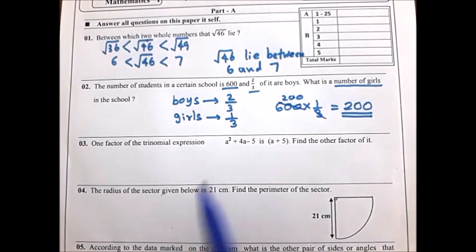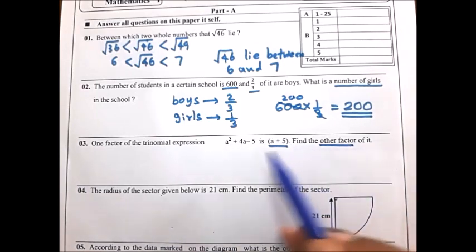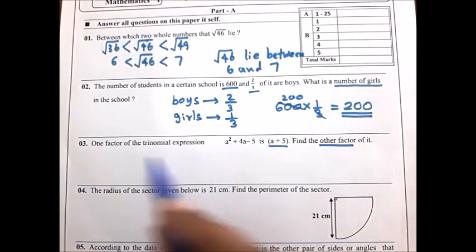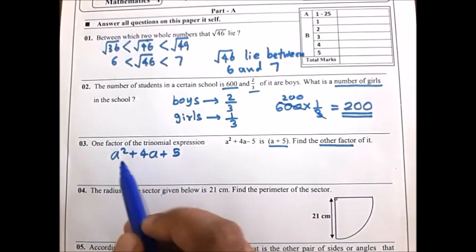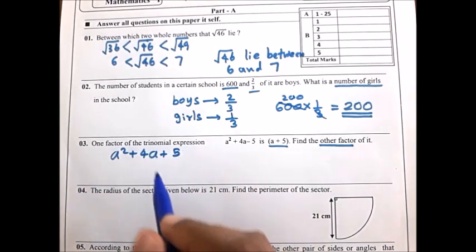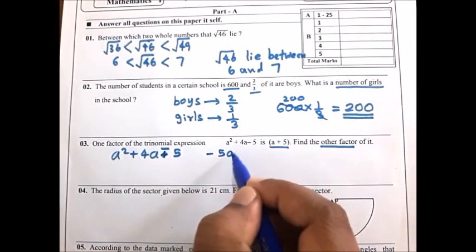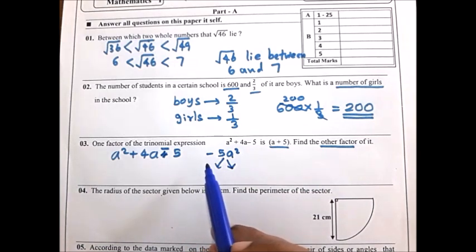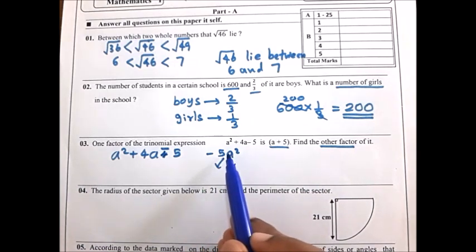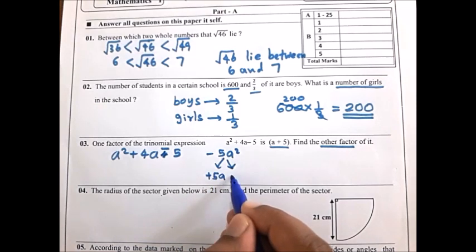Now look at the third question. One factor of this trinomial expression is given; you have to find the other factor. I am going to factorize this trinomial expression. First multiply the first term and last term: minus 5a to the power 2.